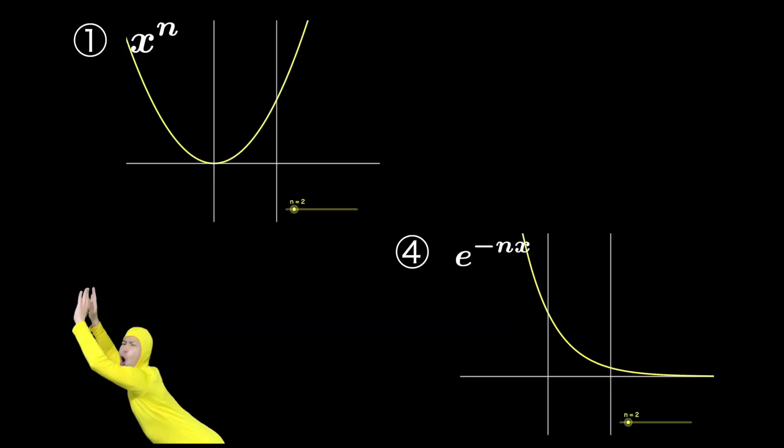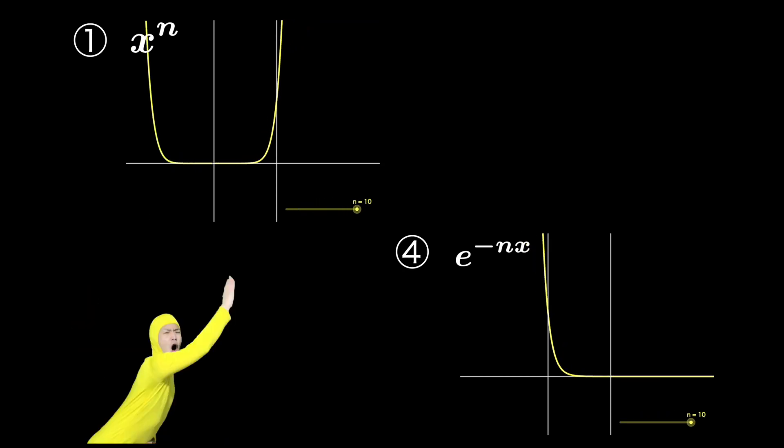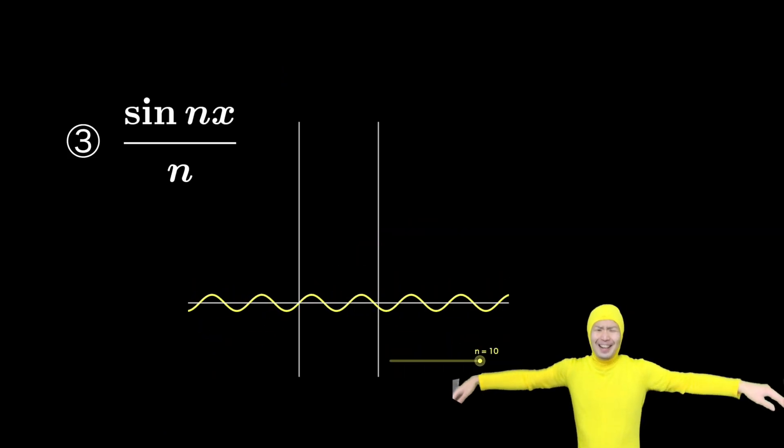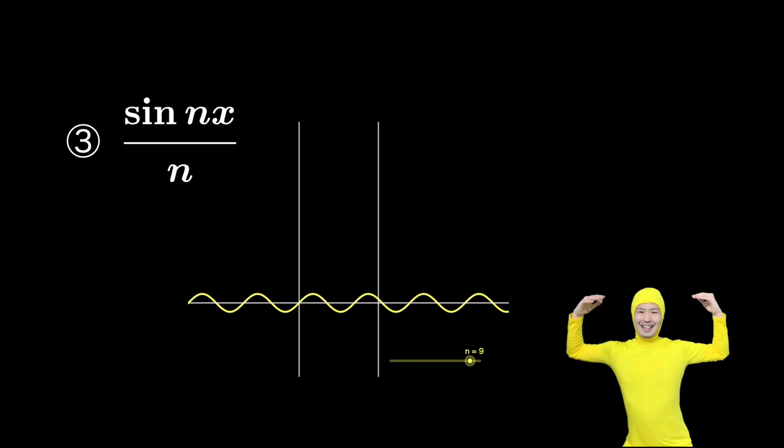Numbers 1 and 4 converge to functions that are ripped apart. Ouch! Number 3 closes in on the X-axis globally. This is indeed Uniform Convergence.